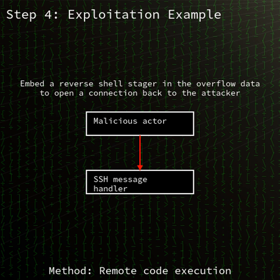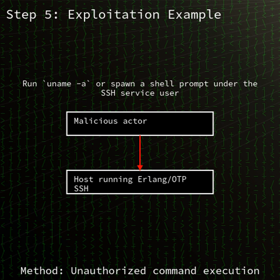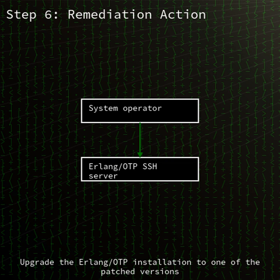An attacker sends crafted SSH protocol messages that bypass authentication checks in the Erlang OTP SSH daemon. By exploiting a flaw in message handling, they can execute arbitrary commands on the target system without valid credentials. Proof-of-concept code is publicly available, and several threat actors are already testing exploits in the wild.